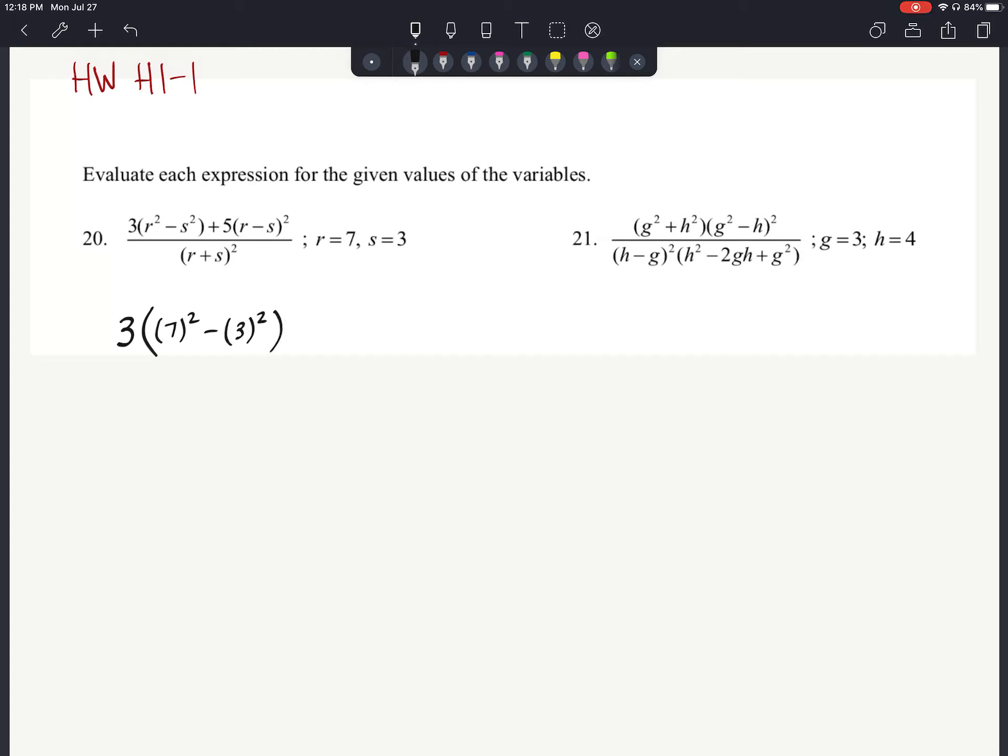I'm sorry, I wrote that wrong, that should be a 7. So make sure you put the right number in for the right variable, 7 minus 3, and then that is being squared, and that is all over, in parentheses, 7 plus 3, and then that is squared.